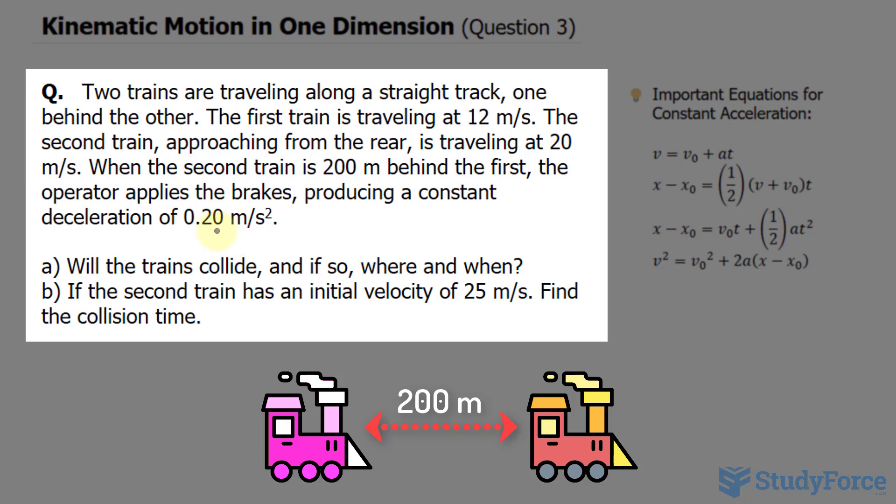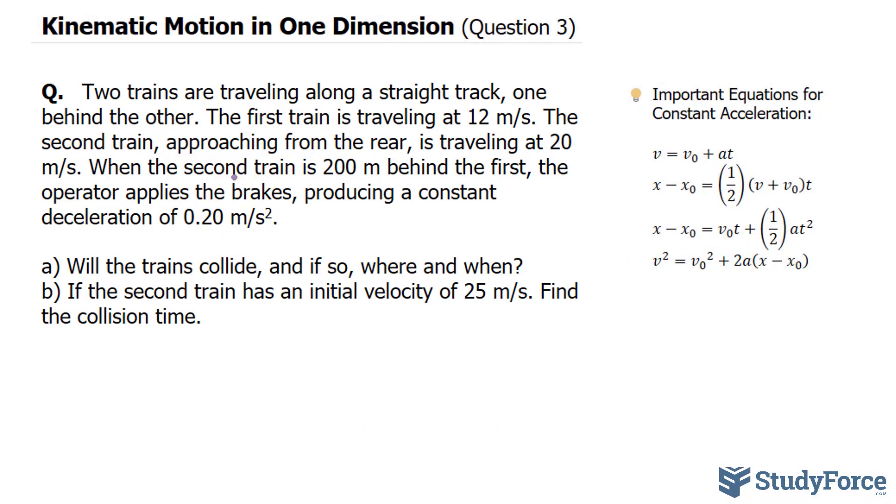So that pertains to the second train. In part A, will the trains collide and if so, where and when? And in part B, if the second train has an initial velocity of 25 meters per second, find the collision time.